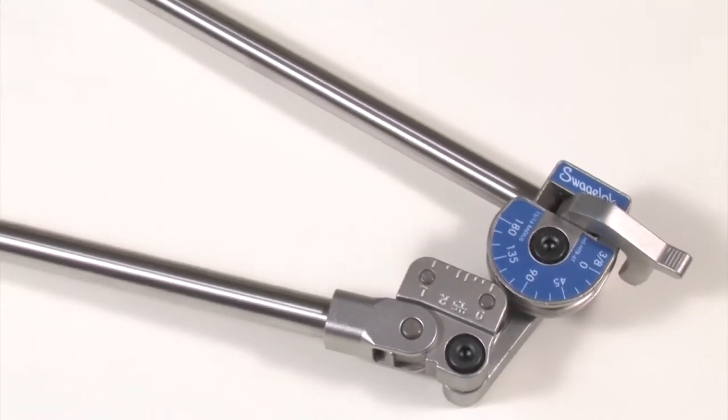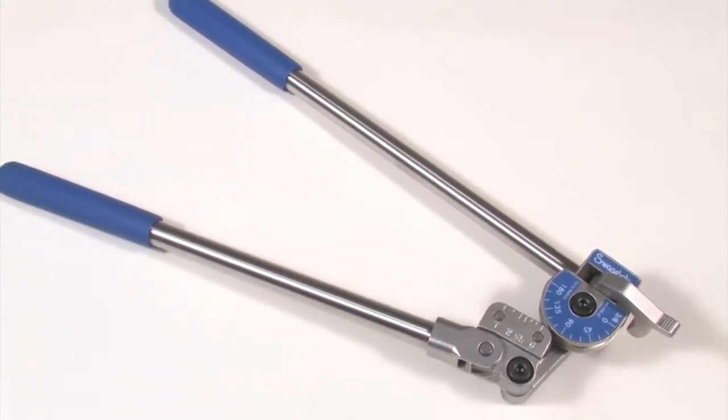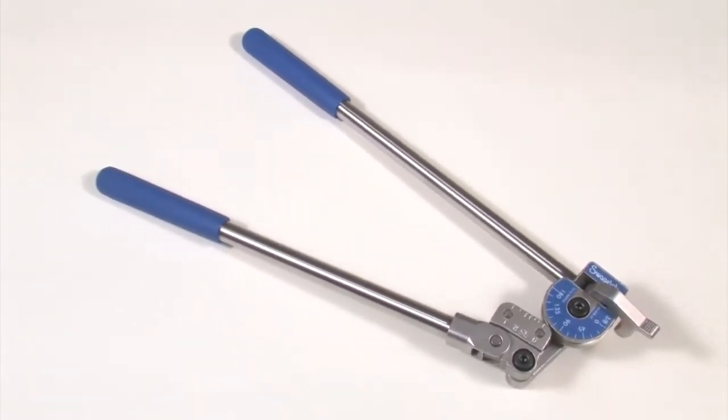Making bends in stainless steel CNG fuel lines can be done with a hand bender, since the lines are relatively small in diameter.